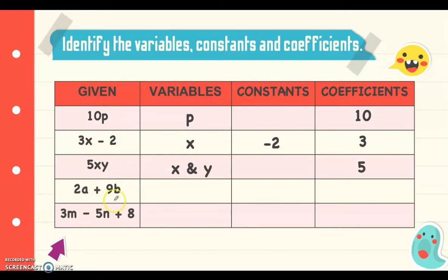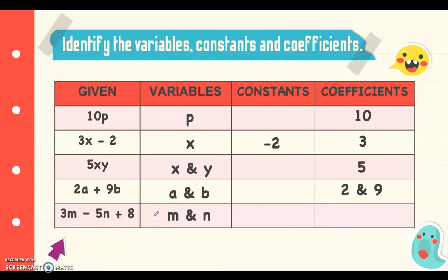We also have 2a plus 9b. The variables are a and b. There is no constant. The coefficients are 2 and 9, both positive since the operations are positive. Next, 3m minus 5n plus 8: the variables are m and n. The constant is 8, which is a fixed value. The numerical coefficients are positive 3 and negative 5 — we include the subtraction sign with 5, making it negative 5.